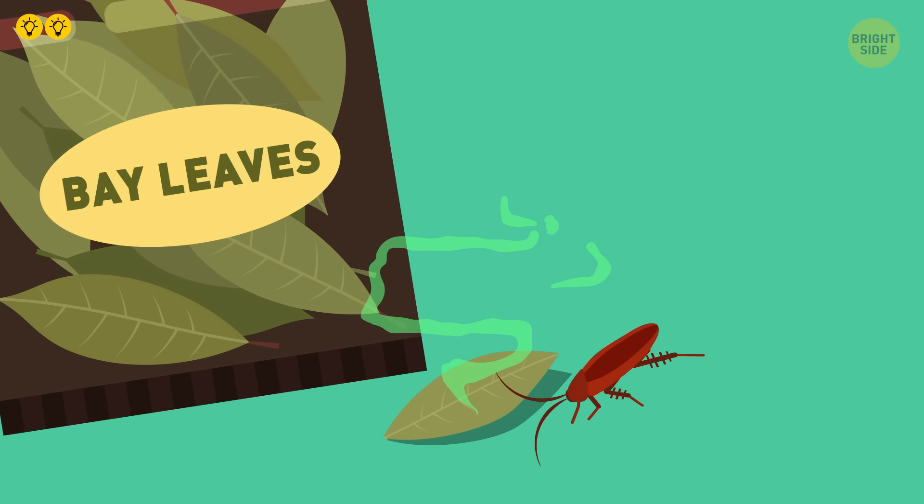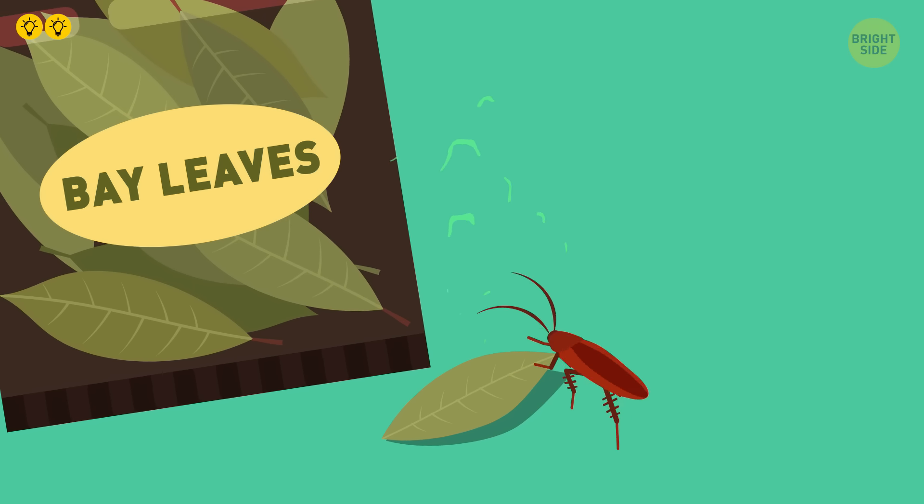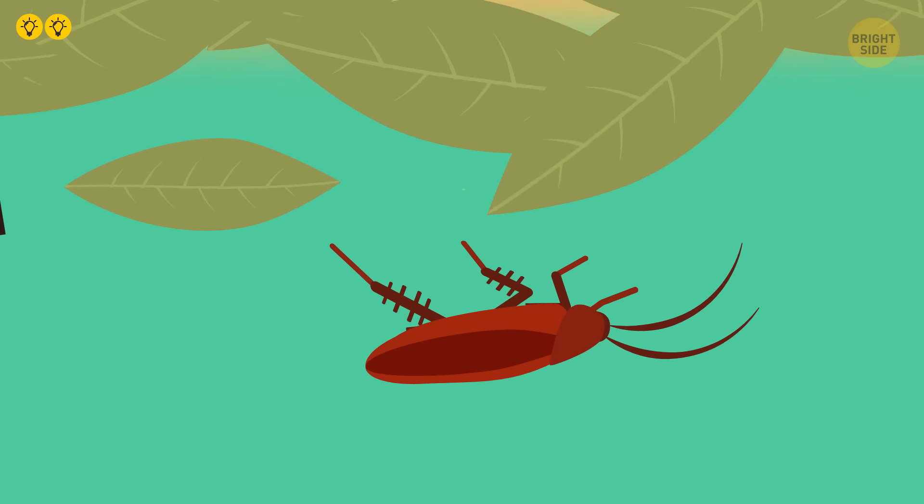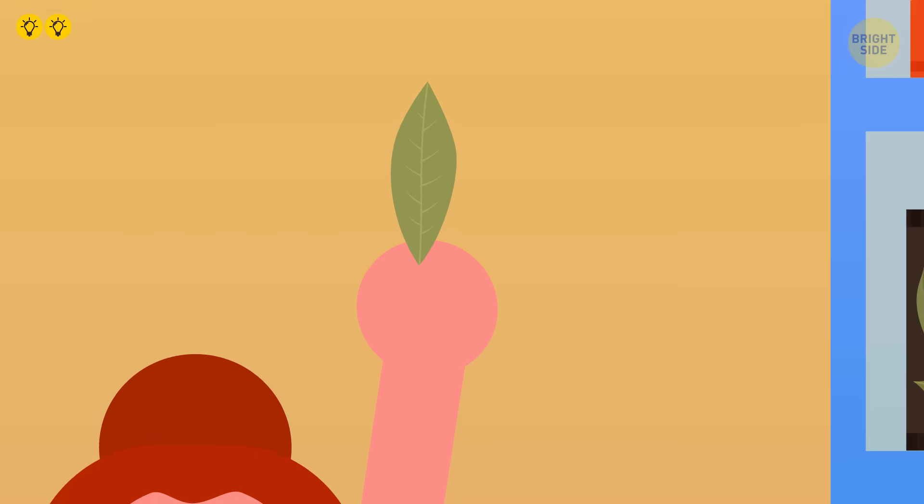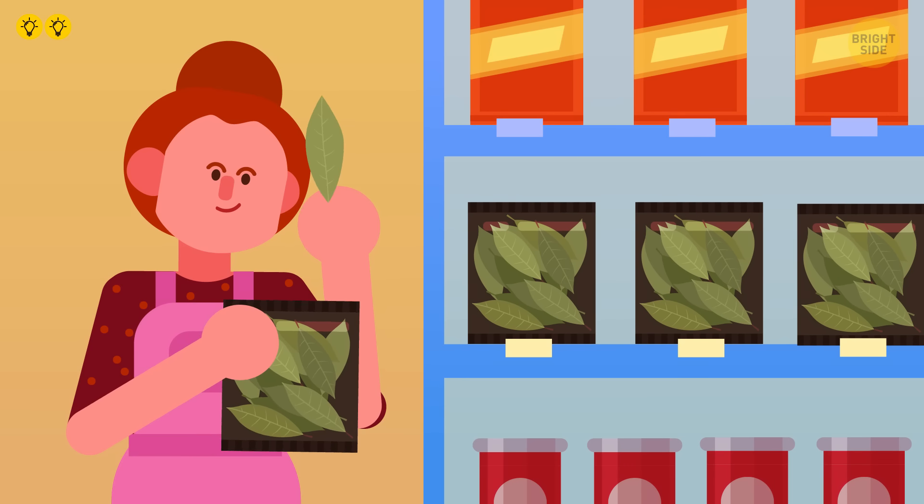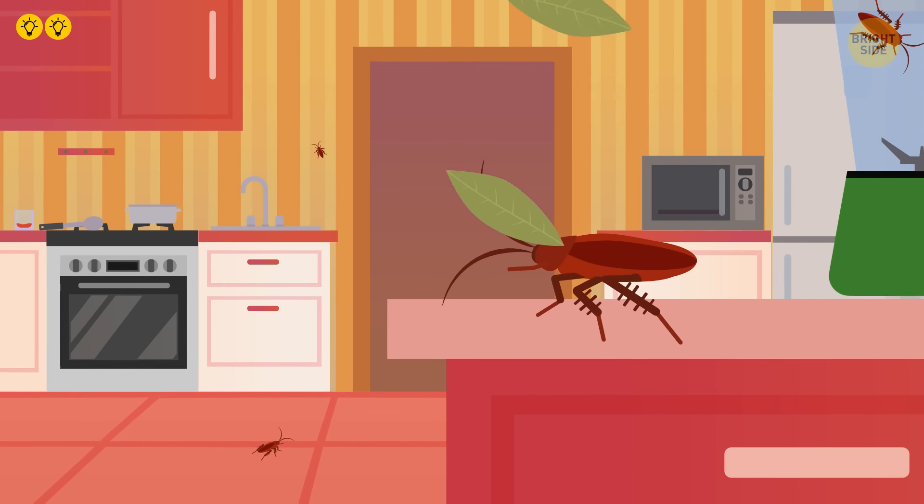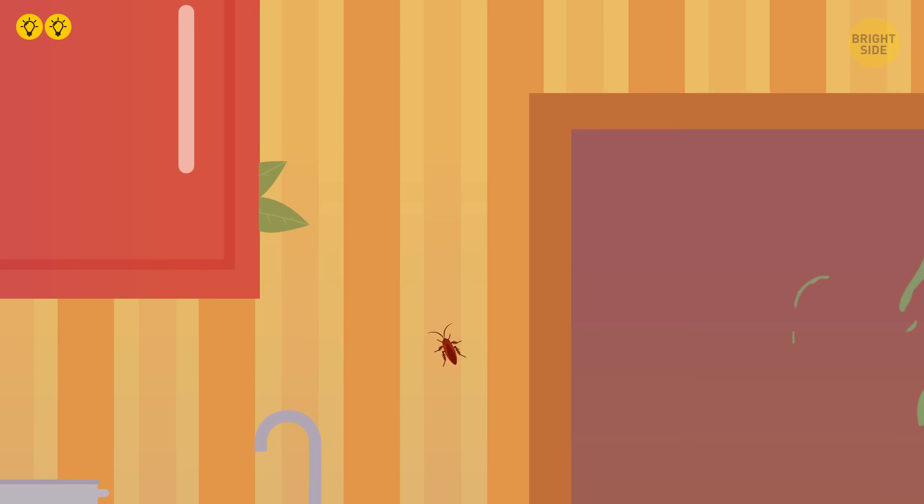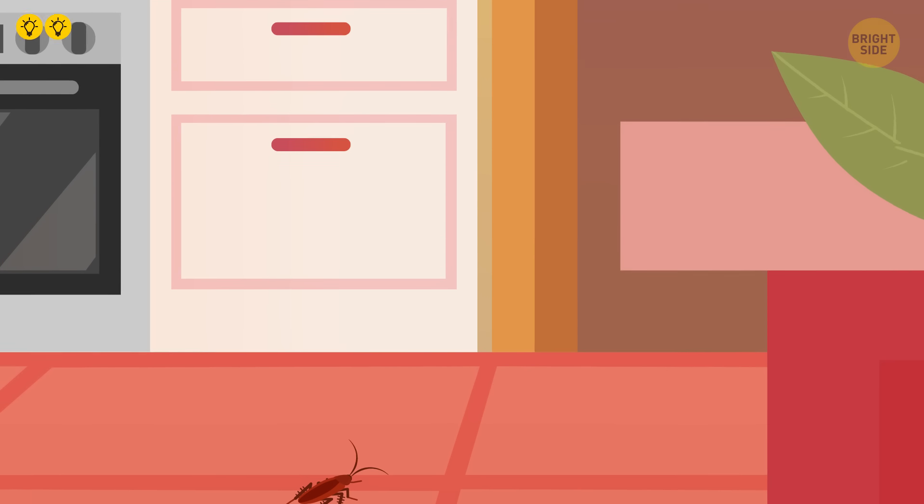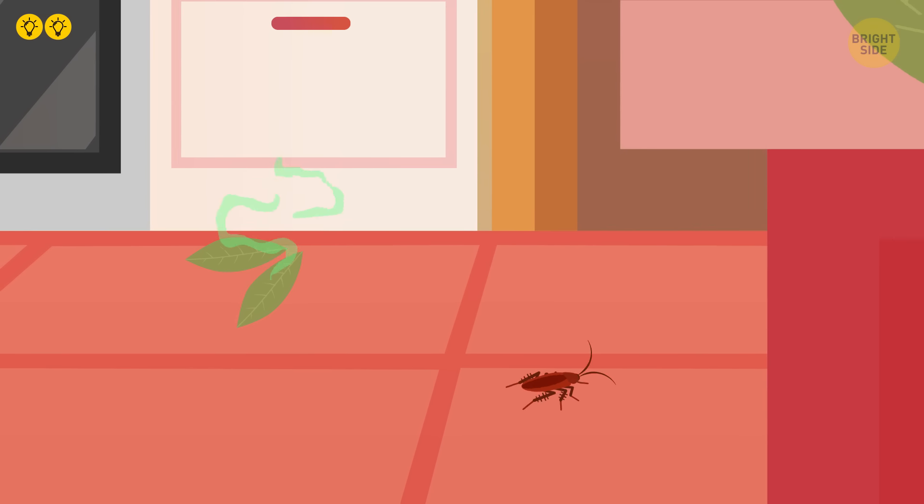Bay leaves. Cockroaches are repulsed by the smell. You probably already have bay leaves on hand, but if not, they're easily found in any grocery store. Try tucking them or leaving a clump in those hard-to-clean places. This method may take a lot of bay leaves and patience, but it's a nice natural way to send roaches packing.